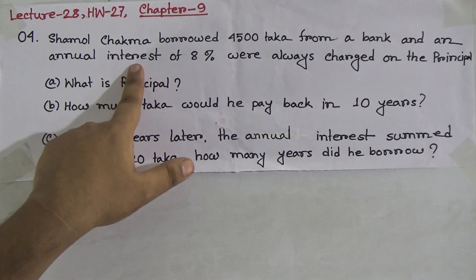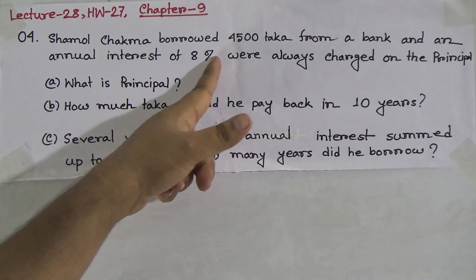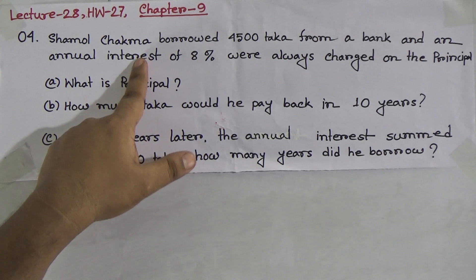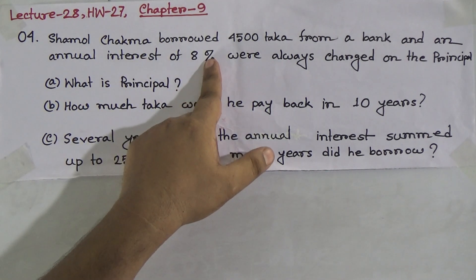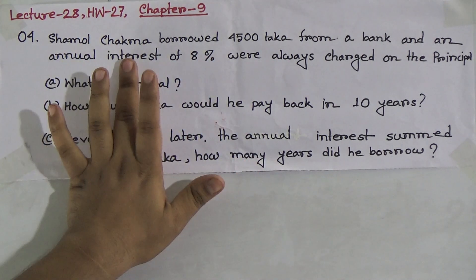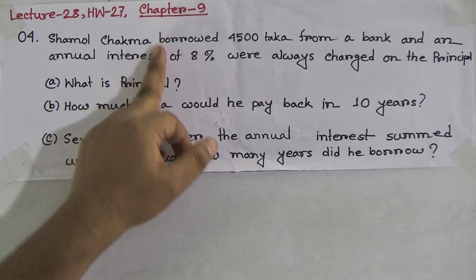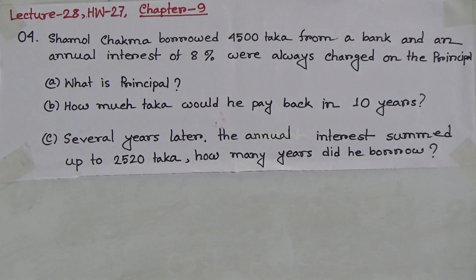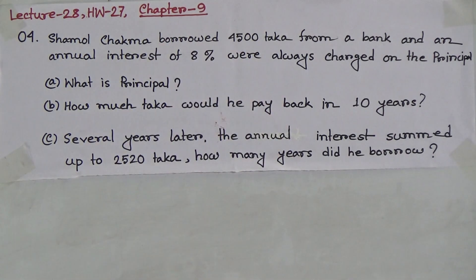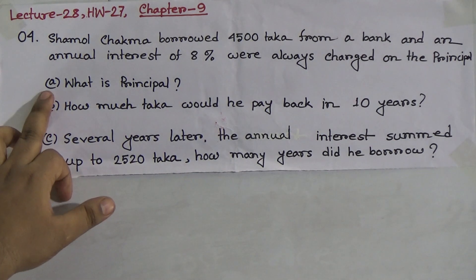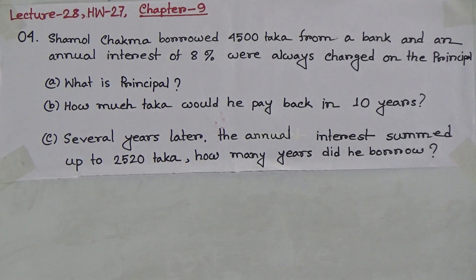And the annual interest rate is 8%. My dear students, notice here 'annual interest' — but as a percentage is given, it must be the annual interest rate. That means interest rate is 8%. So from the stem we get two pieces of information: one is the principal and another is the interest rate of 8%. Now we read the questions.